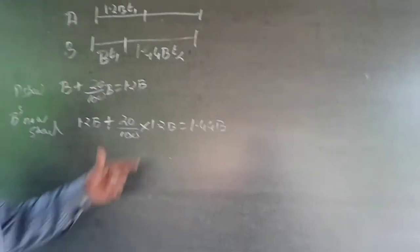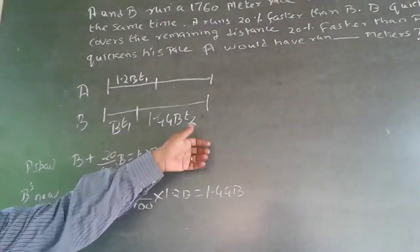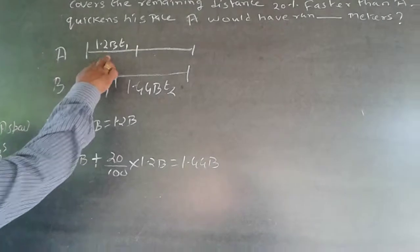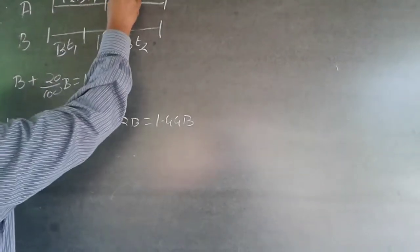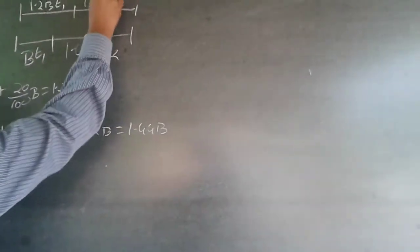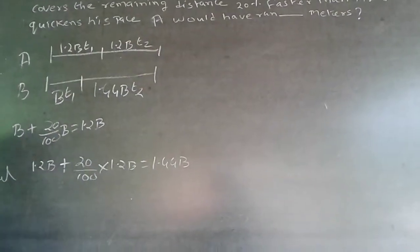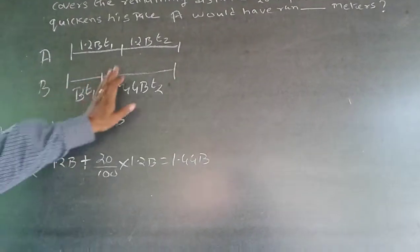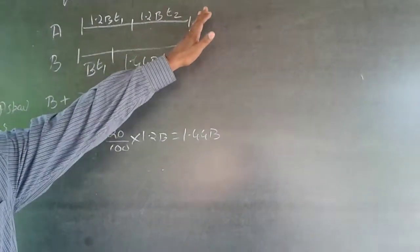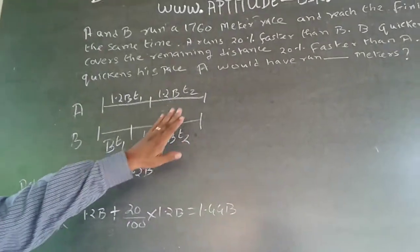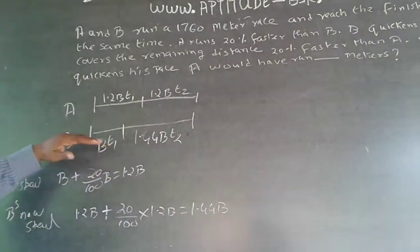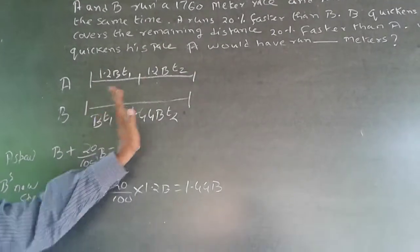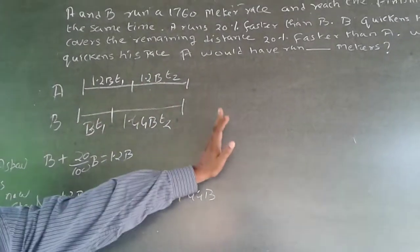Speed into time gives distance covered. A is not going to change his speed — he keeps running at 1.2B, so A covers 1.2B × T2 in the second phase. Both reach the finish at the same time, so T1 + T2 is the total time. Therefore: 1.2B·T1 + 1.2B·T2 = 1760, and B·T1 + 1.44B·T2 = 1760, since both cover the same 1760 meter distance.